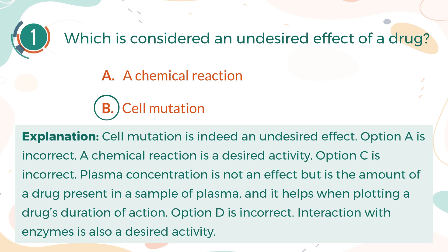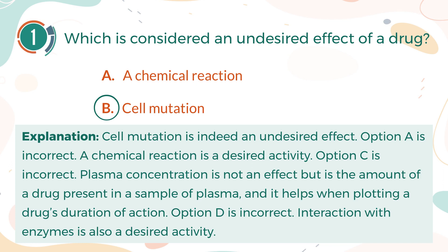Option A is incorrect. A chemical reaction is a desired activity. Option C is incorrect. Plasma concentration is not an effect, but is the amount of a drug present in a sample of plasma, and it helps when plotting a drug's duration of action. Option D is incorrect. Interaction with enzymes is also a desired activity.